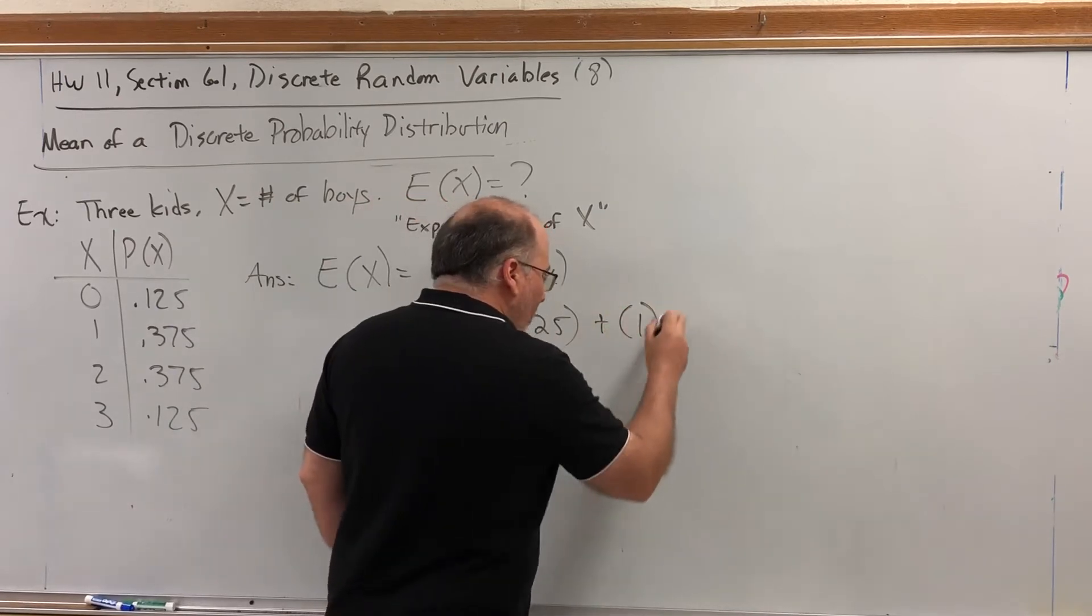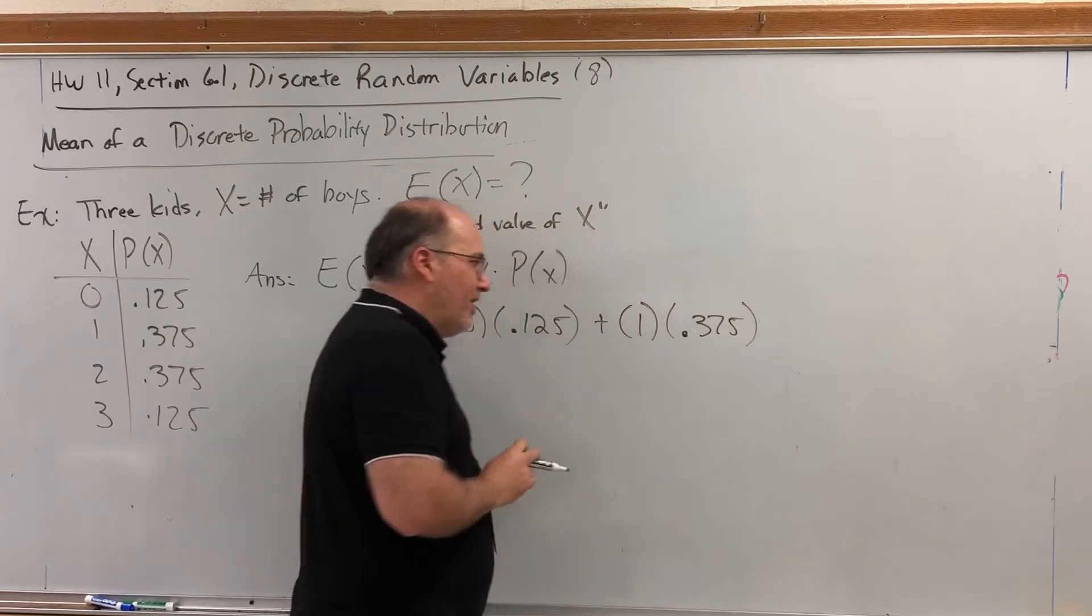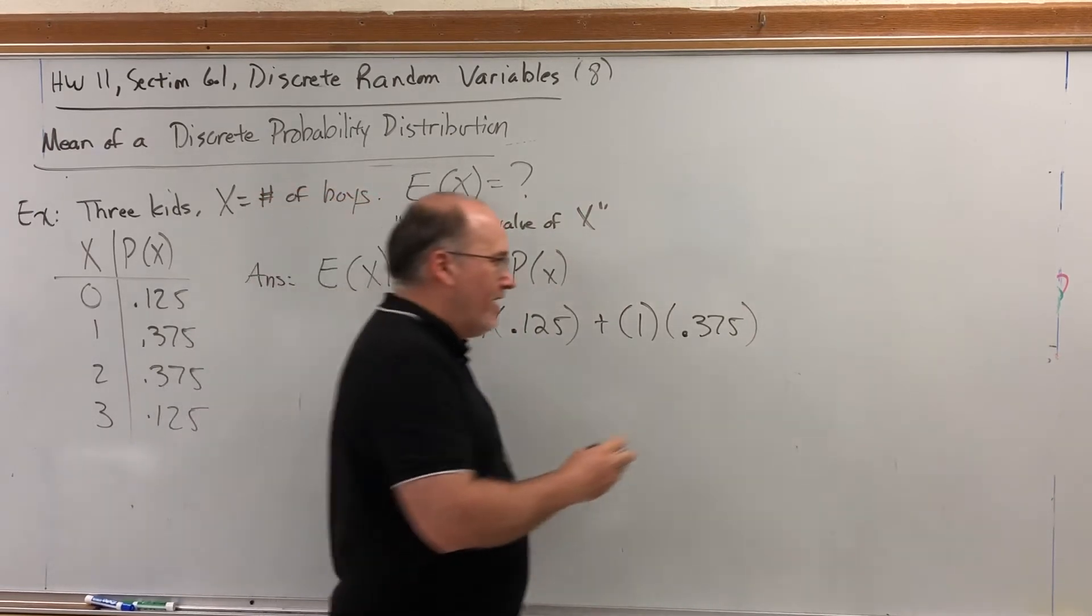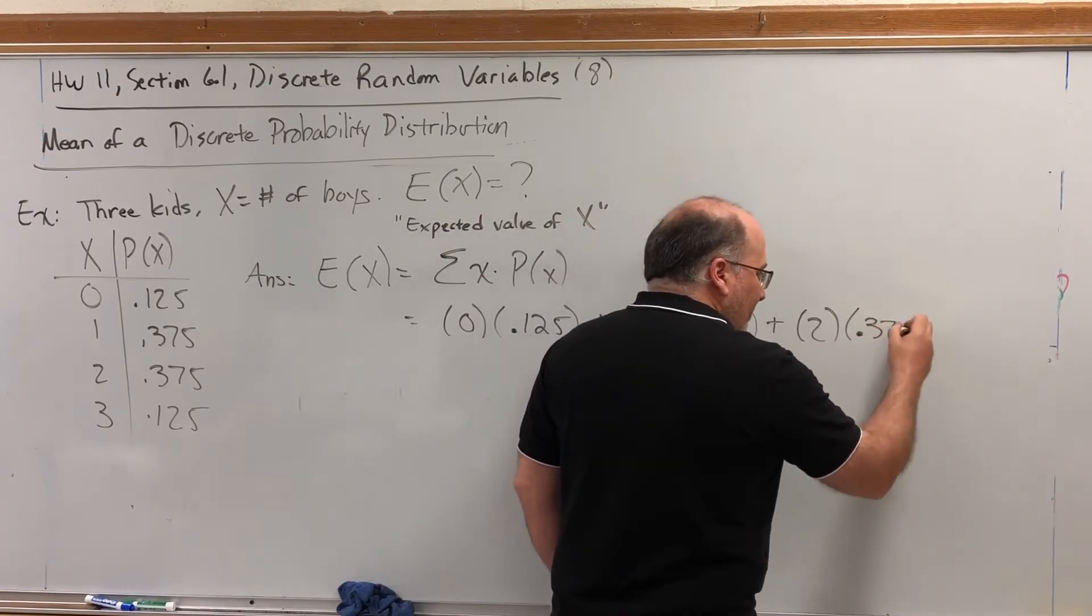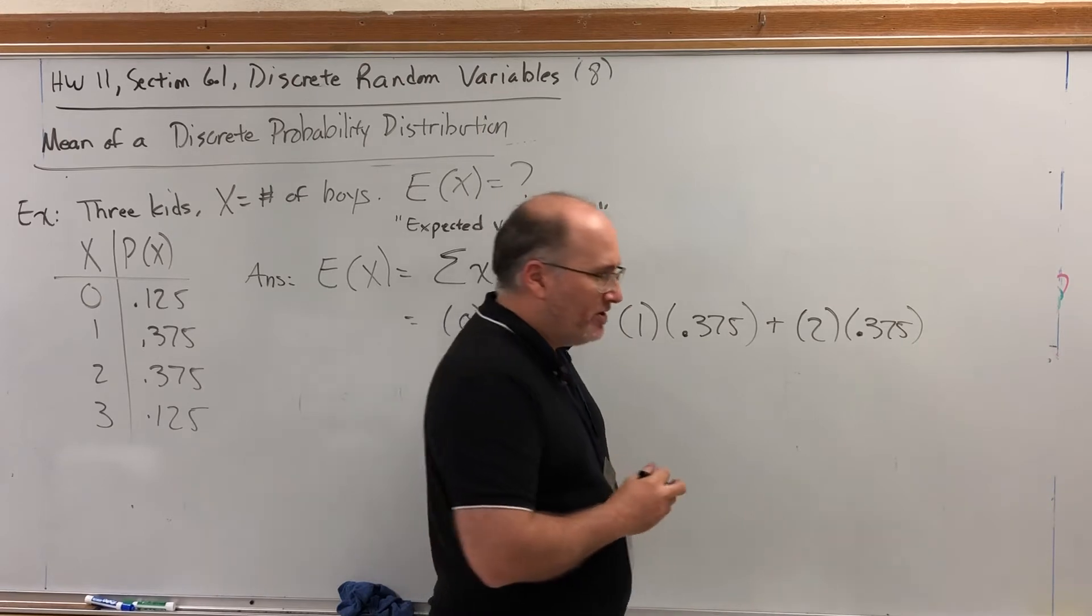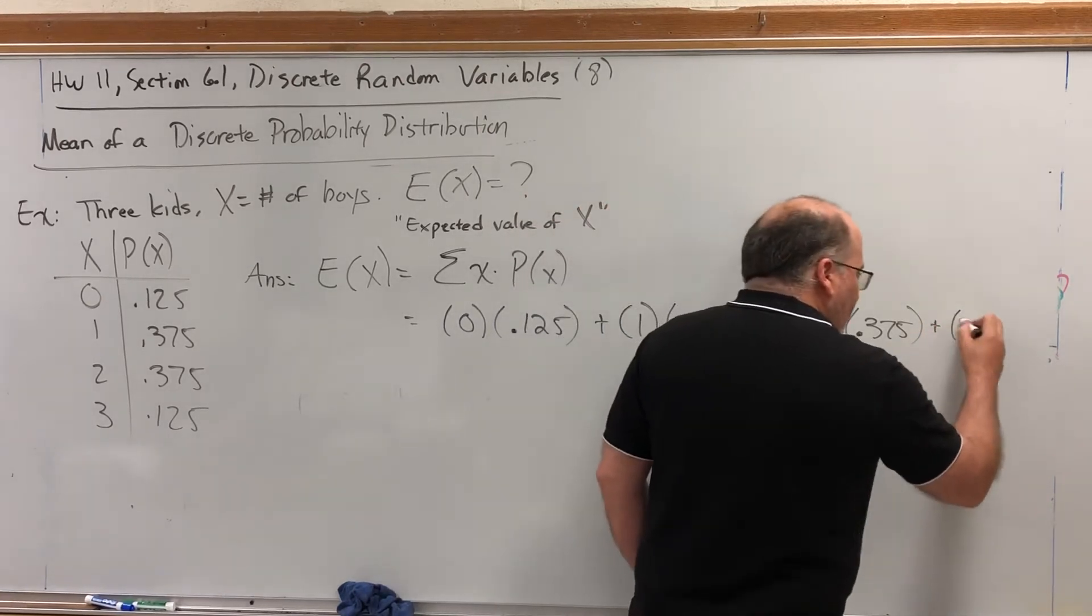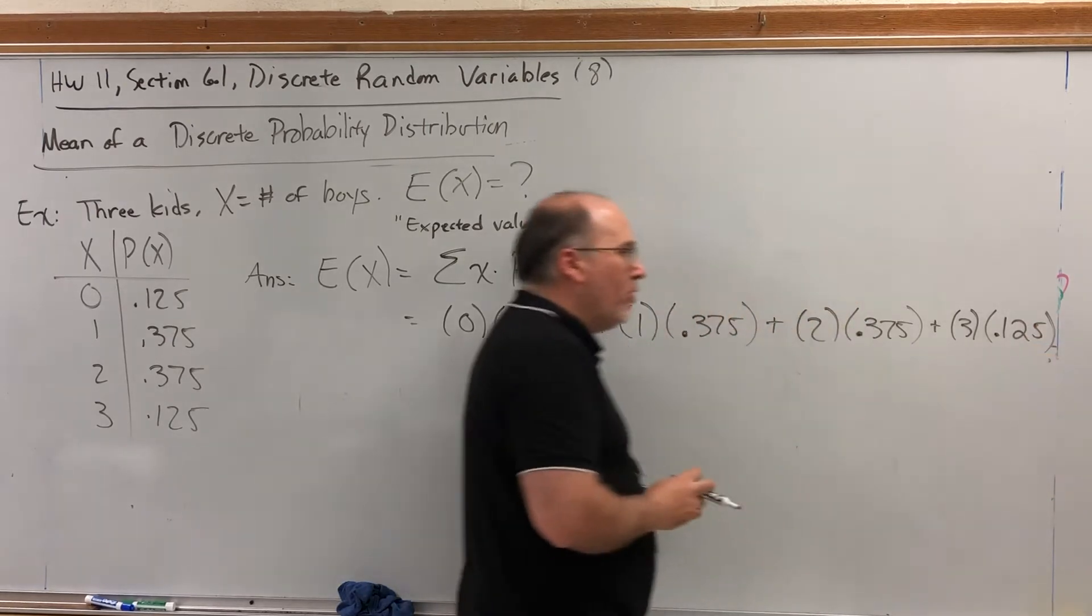Plus one boy, we can expect 37.5% of the time, so 1 times 0.375. For two boys, we can expect that 0.375 of the time, or 37.5% of the time. And for three boys, we can expect that 12.5% of the time, 0.125.